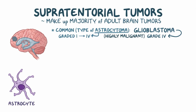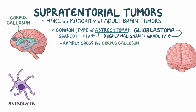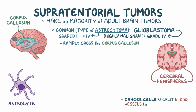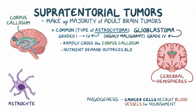While astrocytomas can be graded 1 through 4, glioblastomas are only grade 4 because they're highly malignant. Because of their quick growth and invasion of nearby tissues, glioblastomas tend to rapidly cross the corpus callosum — the midline structure that separates the two cerebral hemispheres — giving it a characteristic butterfly appearance on a cross-section of the brain. Cancer cells typically recruit blood vessels to provide nourishment in a process called angiogenesis, but glioblastomas proliferate so fast that even with angiogenesis, their nutrient demand outpaces the blood supply.